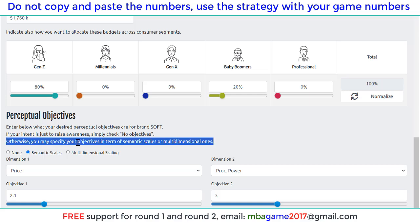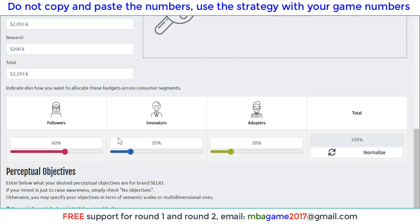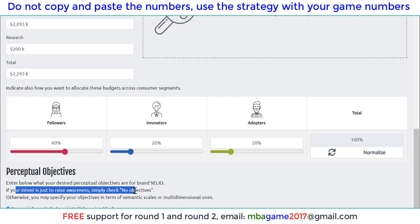We can check the semantics report to find the precise numbers and put them here, so we can target much better. For Saleo, for example, in the Vodai market, we don't need to do that — we just focus on all three segments, so we use a general option to increase more awareness. Then we can allocate the budget for the follower, innovator, and adopter.